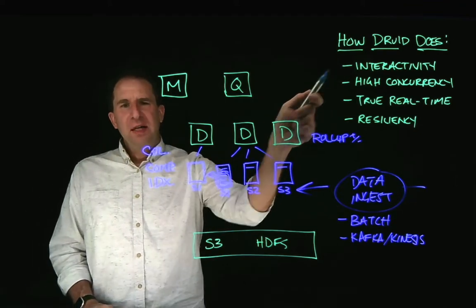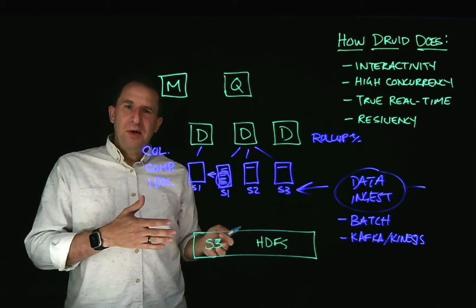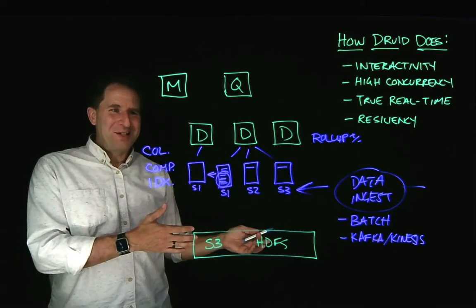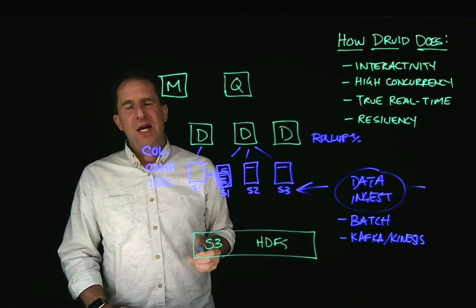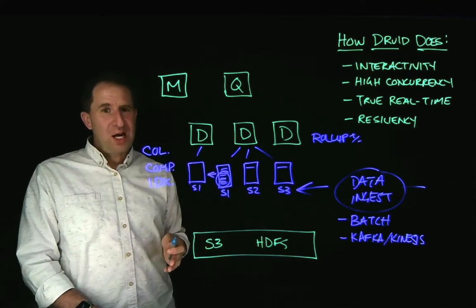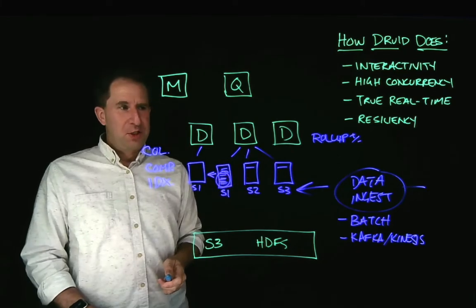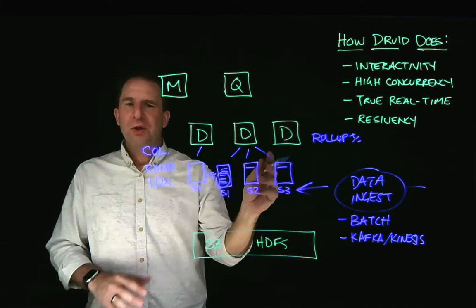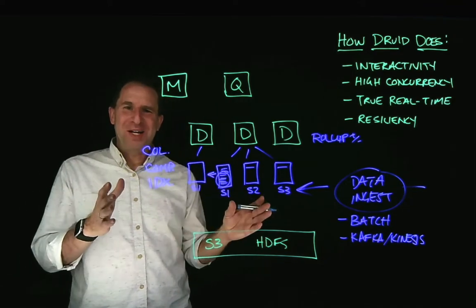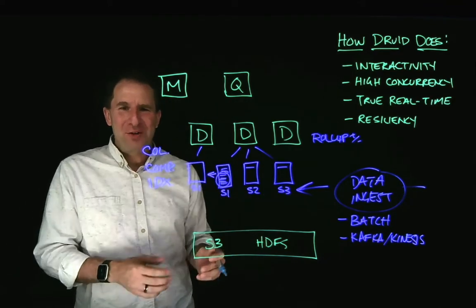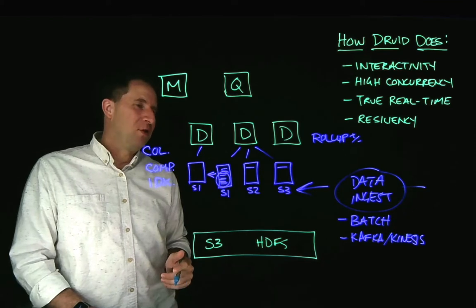What that does is a couple things. It helps with interactivity because when you run the queries, the data's already been aggregated to some extent, and it's ready to go. But it also reduces the amount of data that you need to store on the segments, which saves you money, saves that storage. So rollups are optional. You don't have to do rollups. If you want all the glorious by-the-second data in your data warehouse, you can certainly do that with Druid, no problem.